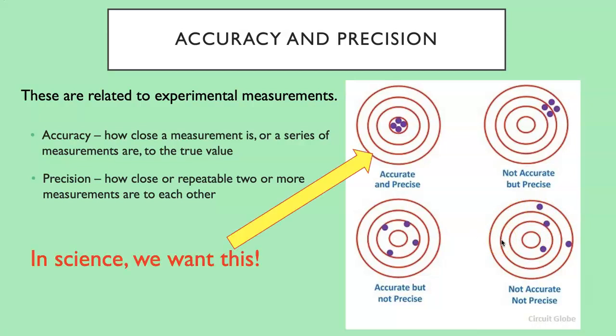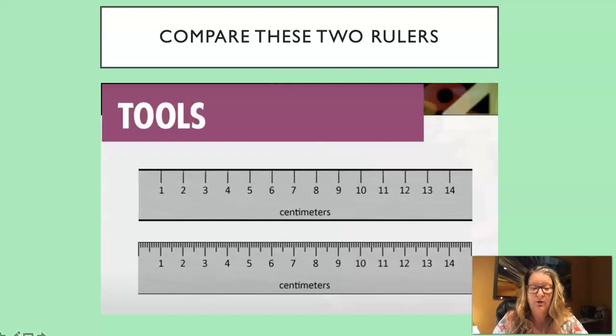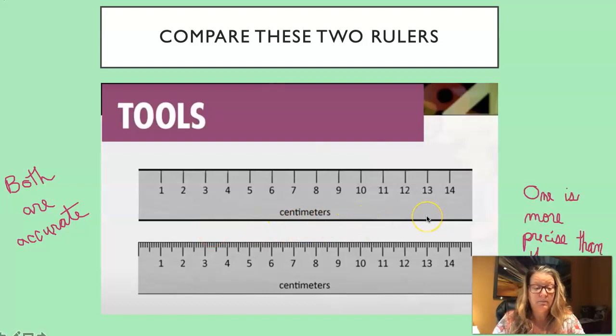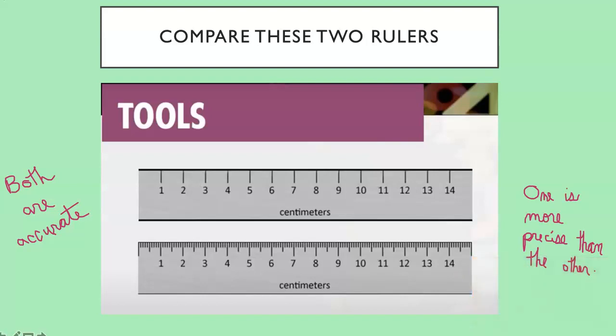As you might imagine, in science we want both accuracy and precision in our measurements and in our instruments. So here are two rulers that are both showing centimeter scales, and both of these are accurate. They're both showing the same amount of distance that would be covered in a centimeter scale. However, one of them is more precise than the other, and I bet you can probably figure out which that is. It's the one on the bottom because the one on the bottom has the centimeters further divided into millimeters. Every centimeter is divided into 10 millimeters. Up here if we measured something that measured just about halfway between maybe the 7 and 8, we'd have to do some estimating. Whereas down on this bottom ruler we could be a lot more precise.